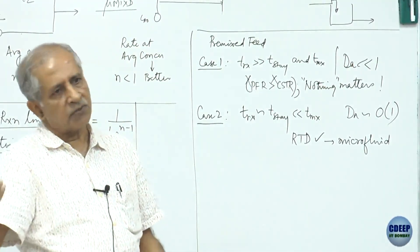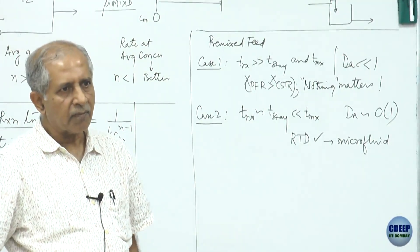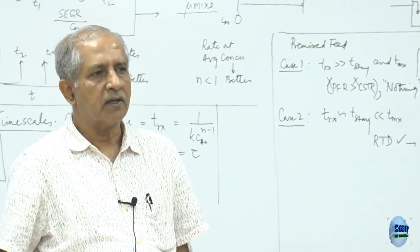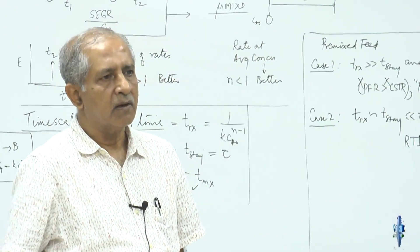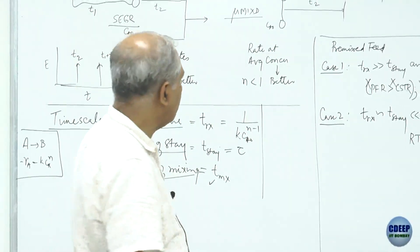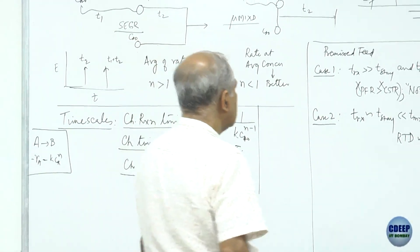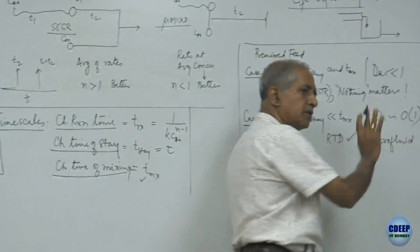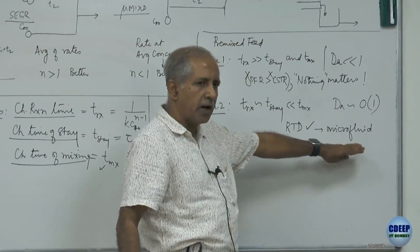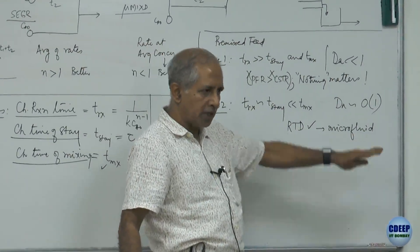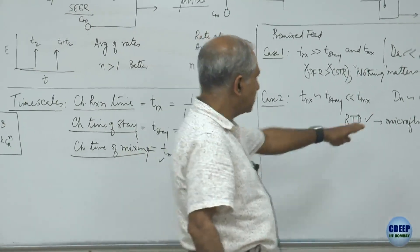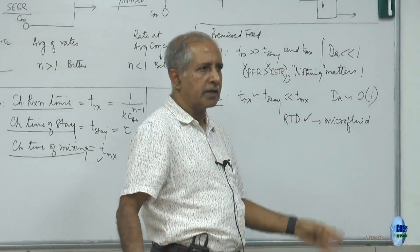Where a reactor falls between PFR and CSTR performance depends on its RTD. Since the time of stay is much less than the mixing time, you can make the microfluid assumption and calculate the conversion on that basis. This is a premixed feed — once it enters the reactor and starts reacting, there will be liquid elements with different concentrations.